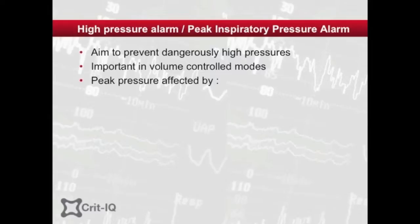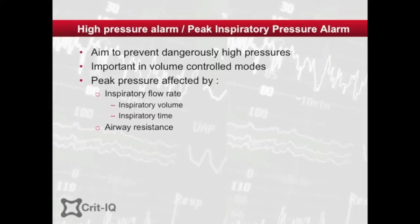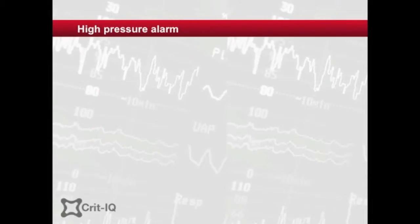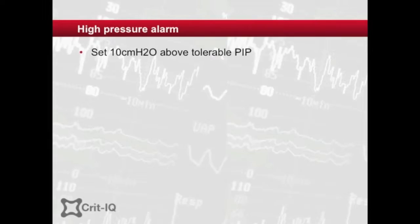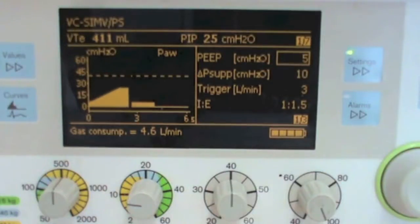Peak pressure is affected by inspiratory flow, which in turn depends on inspiratory volume, inspiratory time, and airway resistance. To a lesser degree, it is affected by lung compliance. The high pressure alarm is usually set within 10 centimetres of water of the desired maximum peak inspiratory pressure, or PIP, and when triggered, the alarm results in automatic cycling of the ventilator into expiration.